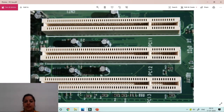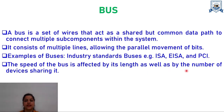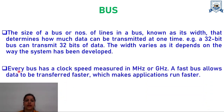This is another pictorial representation of the PCI in which we have 3 slots for PCI. There are certain parameters related to the bus: speed, clock speed, and the width of the bus. The speed of the bus is affected by its length as well as the number of devices sharing it. The width — the total number of lines in a bus — determines how much data can be transmitted at one time. For example, a 32-bit bus can transmit only 32 bits of data. The width varies depending on how the system has been developed. Every bus also has a clock speed measured in MHz or GHz; a faster bus allows data to be transferred faster, making applications run faster.